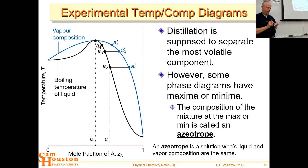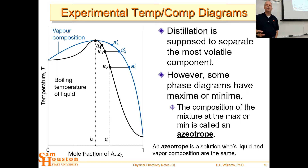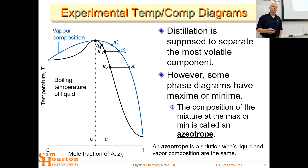We dropped off here last time. Was there anything you needed clarification on, or any questions? We can look at the distillation behavior again if you wish. The tricky thing about azeotropic behavior is that you can't easily distill one substance from another — you can distill it away from the azeotrope, but you can't necessarily completely separate the species.